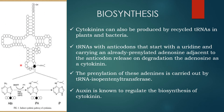DMADP and HMBDP used in cytokinin biosynthesis are produced by the methyl erythritol phosphate pathway. Cytokinin biosynthesis can also be produced by recycled tRNA in plants and bacteria. tRNA with anticodon that start with uridine and carry an already prenylated adenosine adjacent to the anticodon release on degradation an adenosine as a cytokinin. The prenylation of these adenosines is carried out by tRNA isopentenyl transferase.